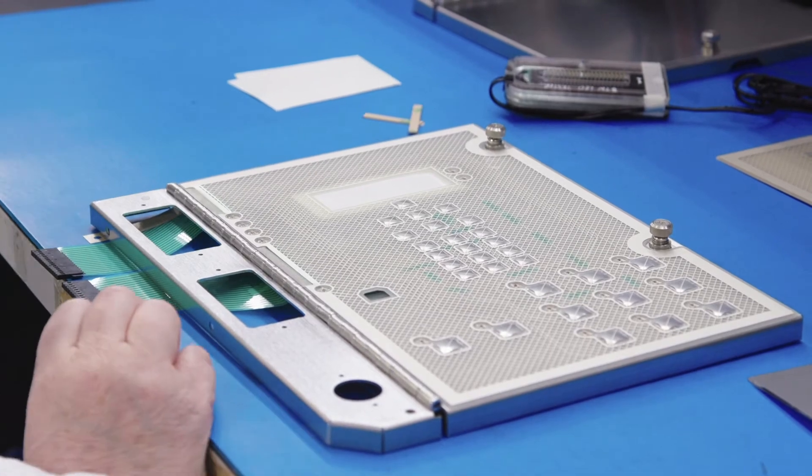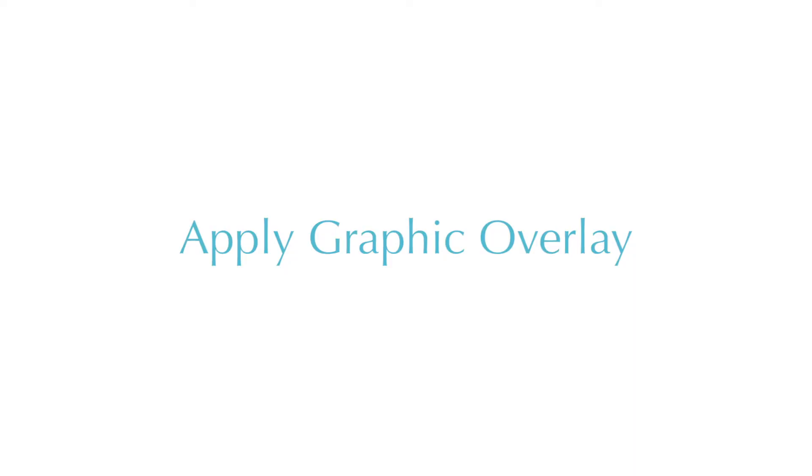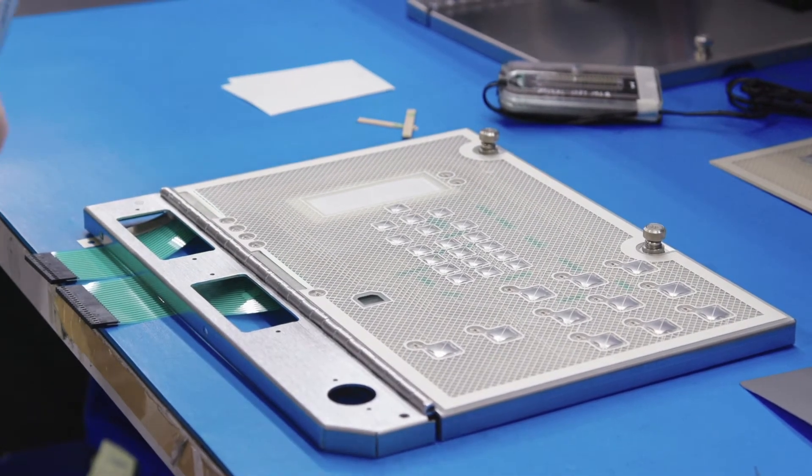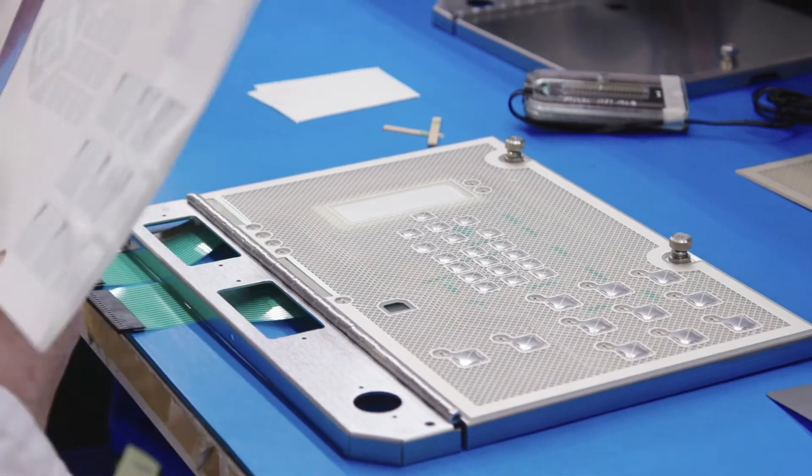So far so good. The next step is to apply the graphic overlay. We don't always do our assemblies in this manner. Many times the graphic overlays are already on the membrane switch.